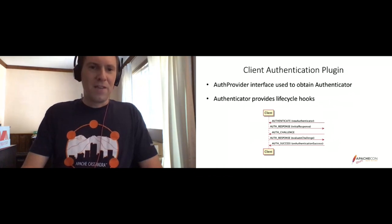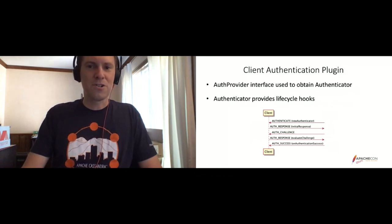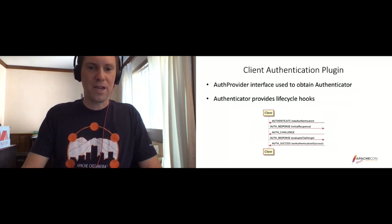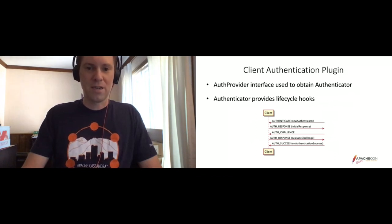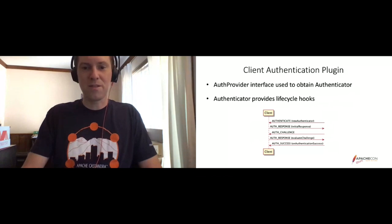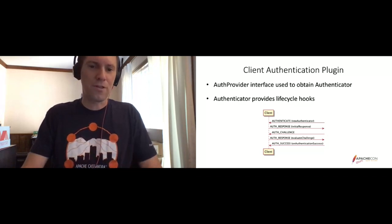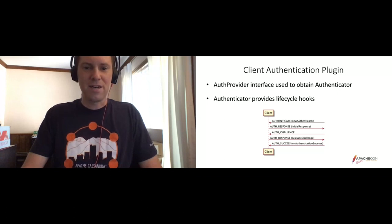From the client side, we have an auth provider interface. These are kind of mirror images to the server plugin, where the auth provider is again like a factory, and then the authenticator is used on a per-session basis for the stateful authentication lifecycle. The authenticator provides lifecycle hooks: when we get an authenticate message, we create a new authenticator. The auth response calls an initialResponse method — this is where in our SIGV4 plugin we send back that special string. The auth challenge comes back with bytes sent from the server, and our auth response sends back whatever the evaluateChallenge method outputs. The auth success message from the server stops the handshake, and the onAuthenticationSuccess method is called on the client.